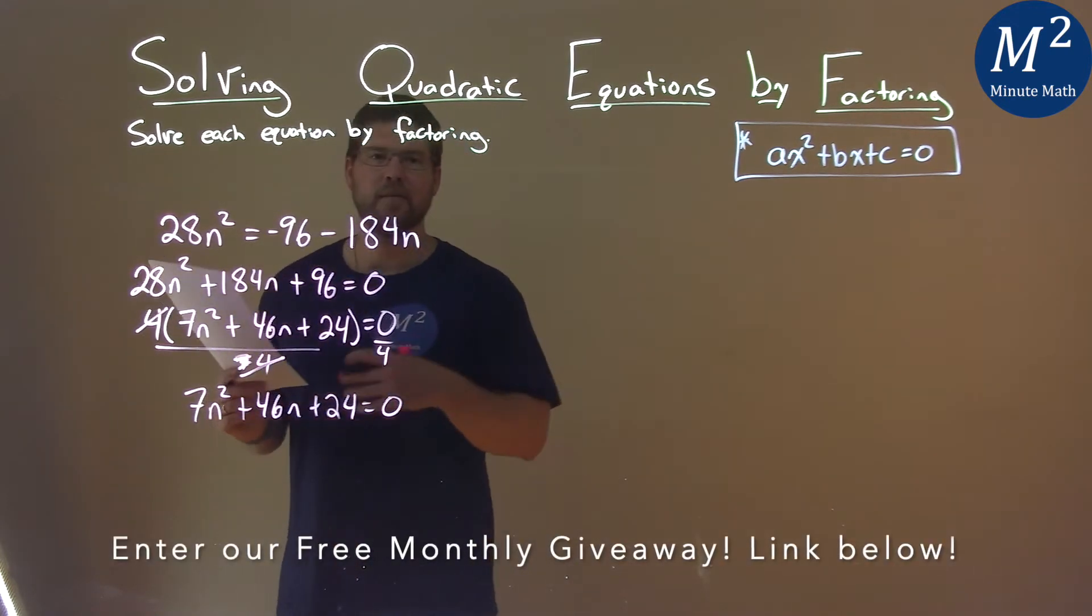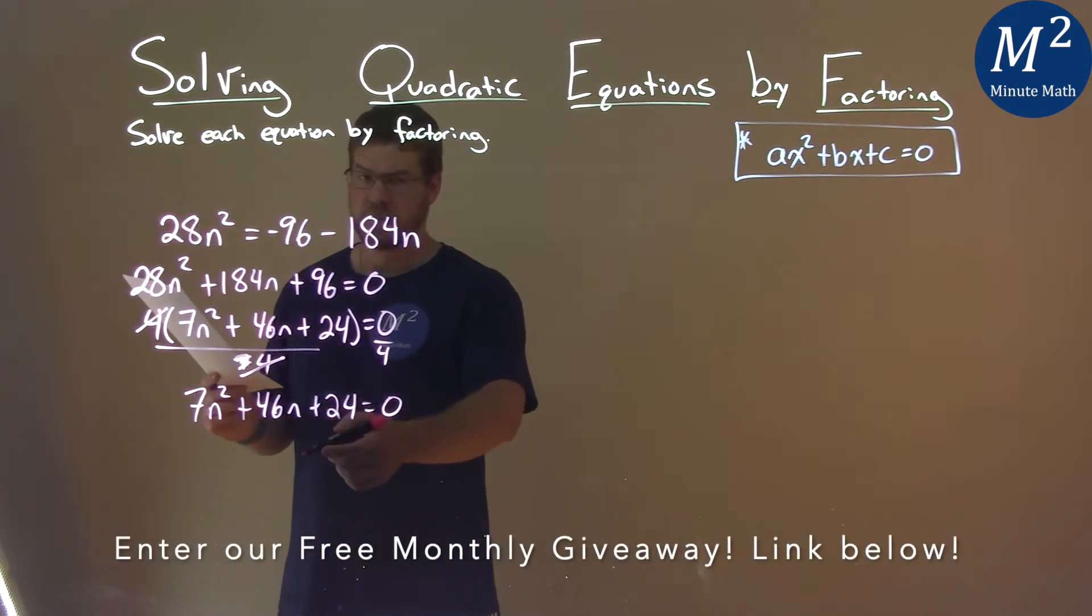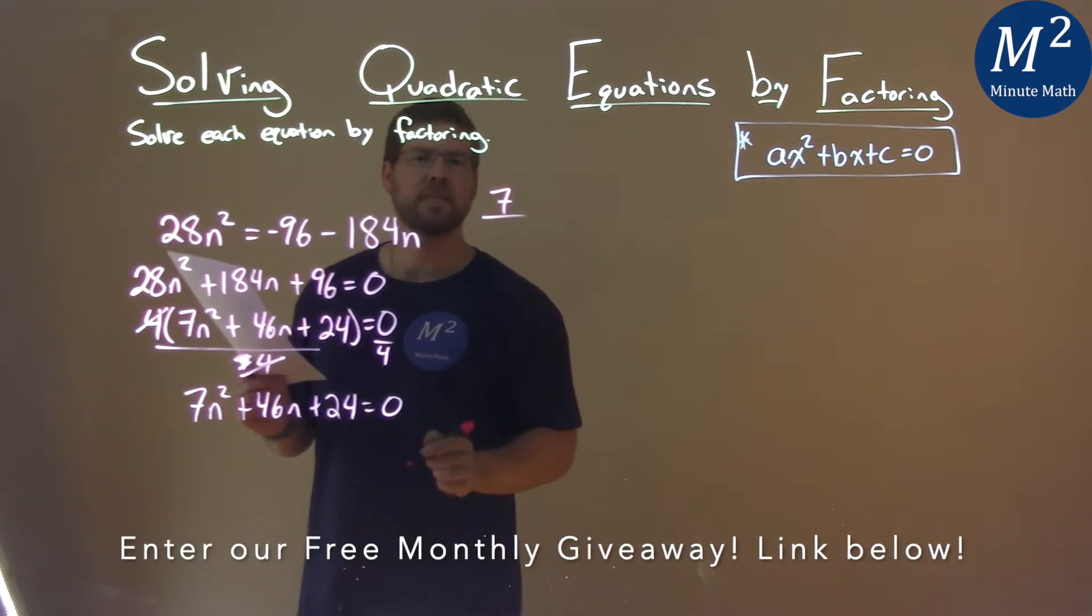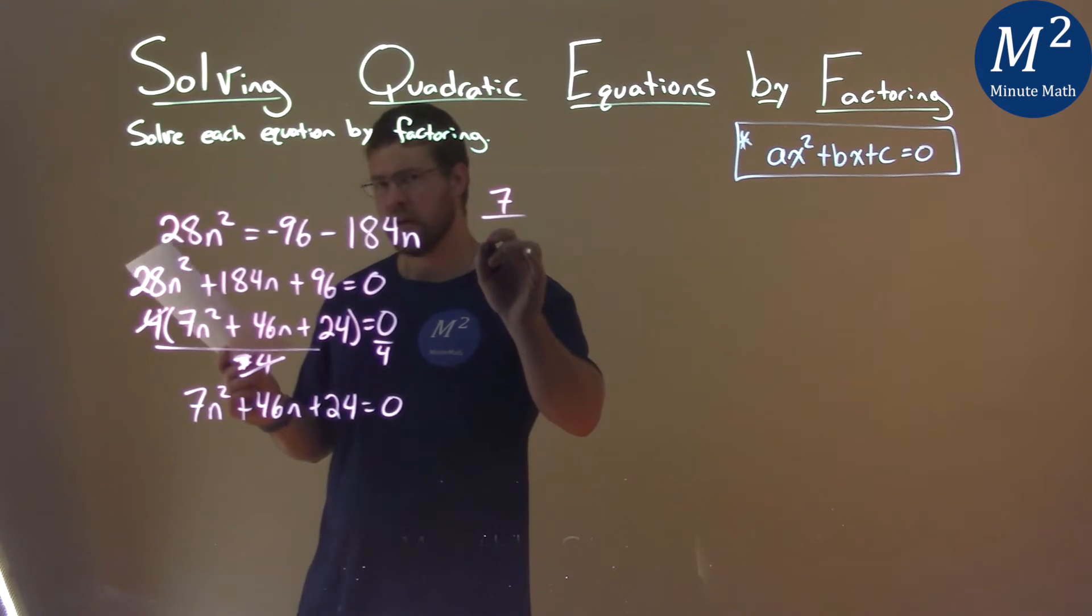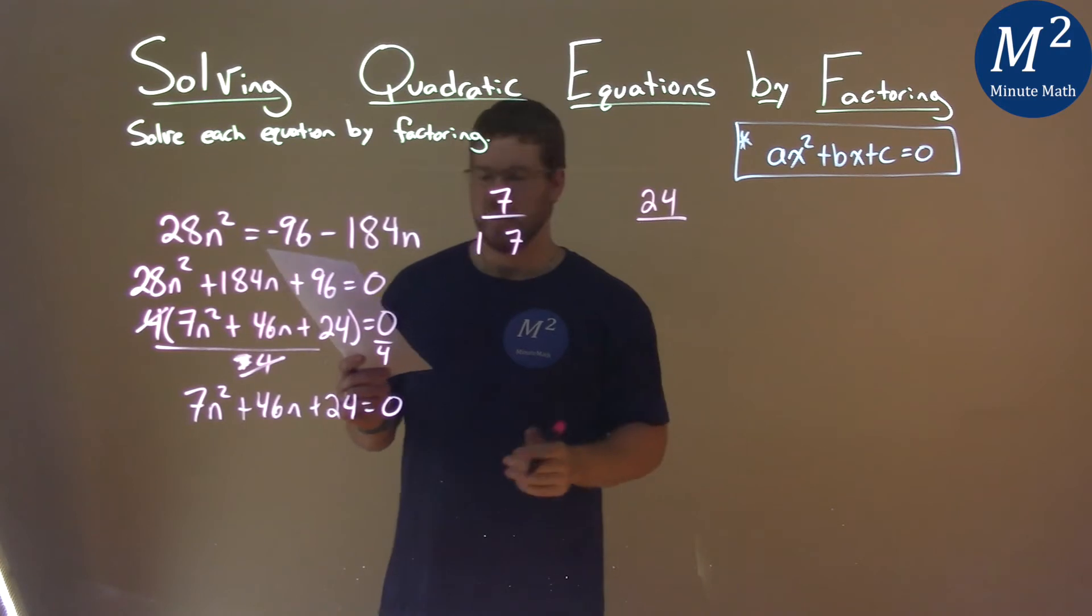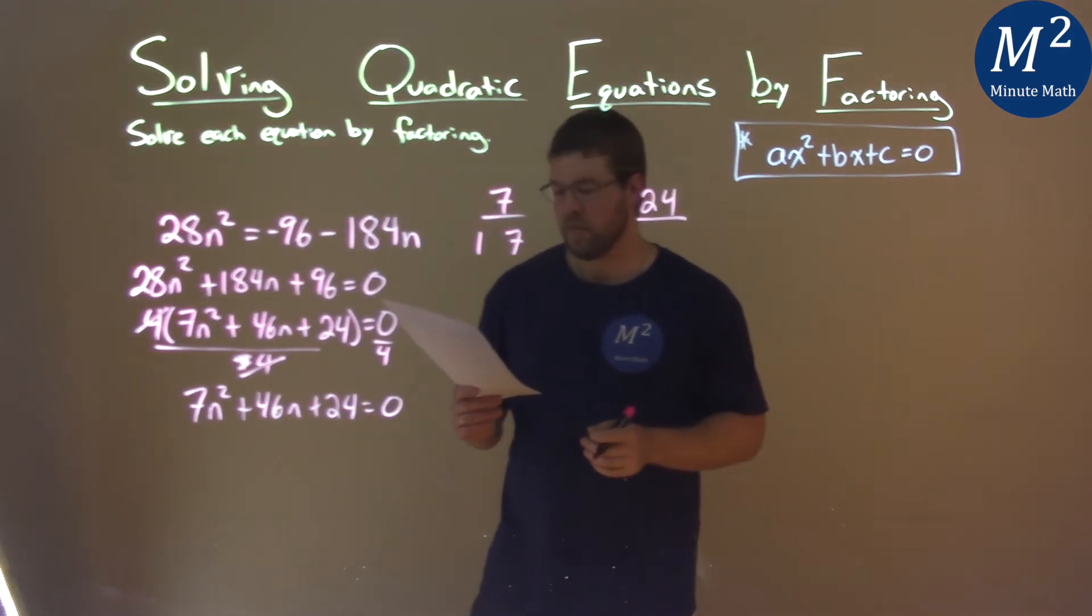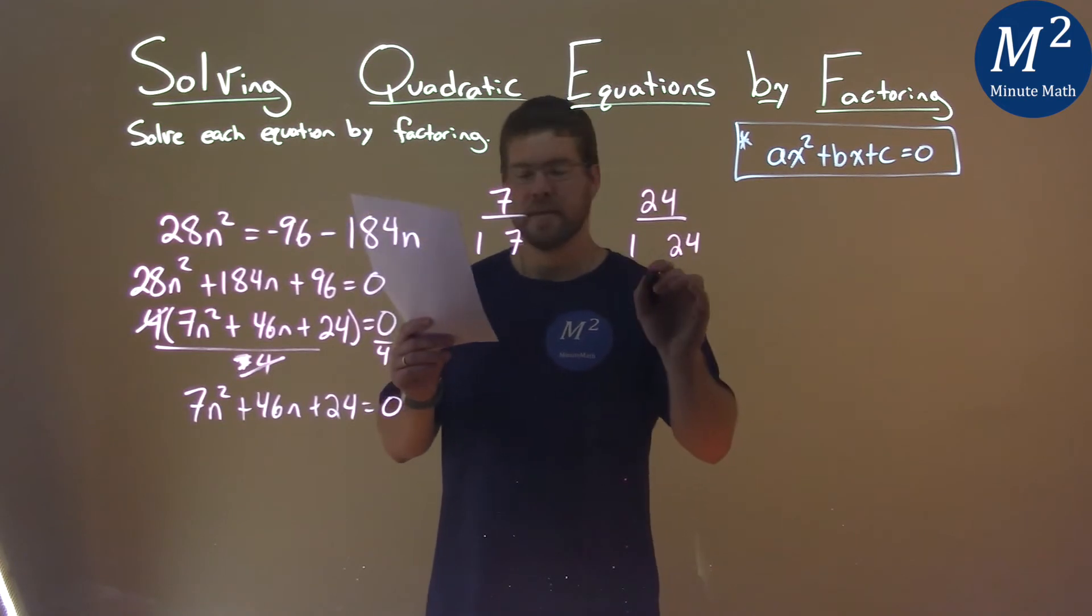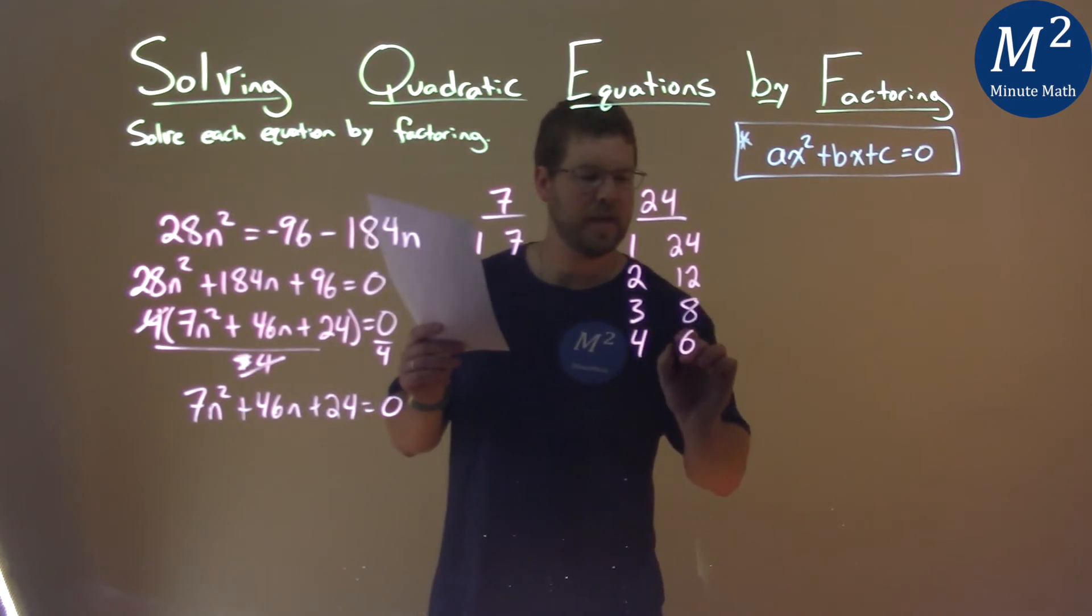So now we have a quadratic equal to zero. Let's factor it. My a value is seven, and seven is what two numbers multiply to be? One and seven. My c value is 24. Let's list all the numbers that multiply together to be 24. One and 24, two and 12, three and eight, and four and six.